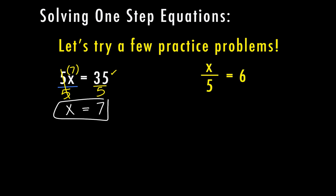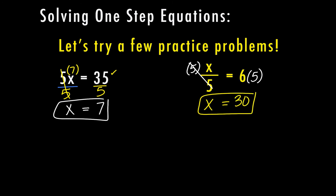For the second practice problem, we have x divided by 5. The opposite of dividing by 5 is multiplying by 5. Whatever I do to one side, I have to do to the other — those cancel, so all I have left on the left side is x. On the right side, 6 times 5 equals 30. Plugging back in, 30 divided by 5 in the original problem equals 6.